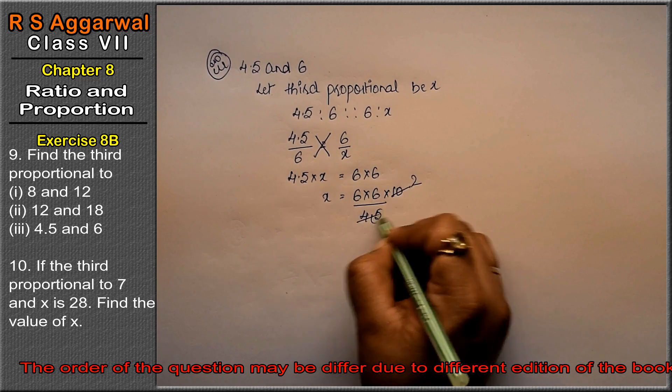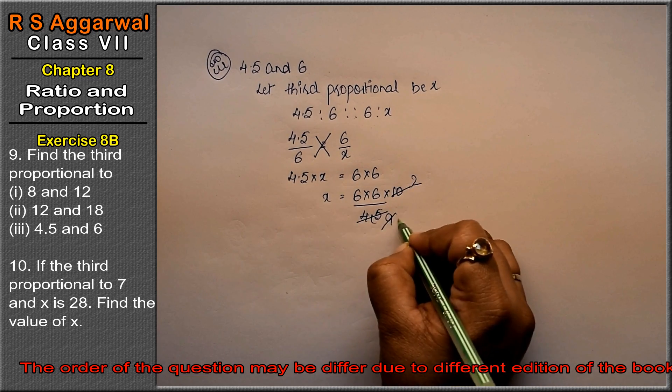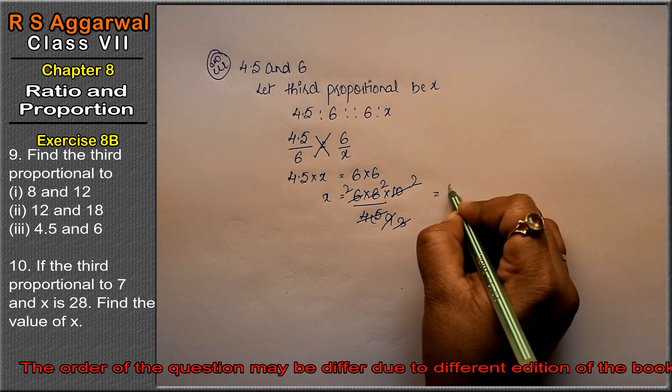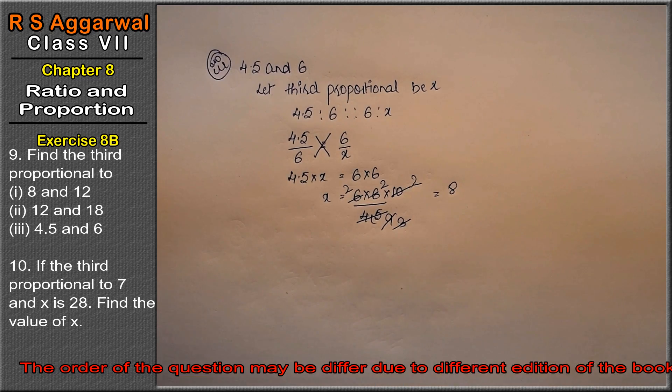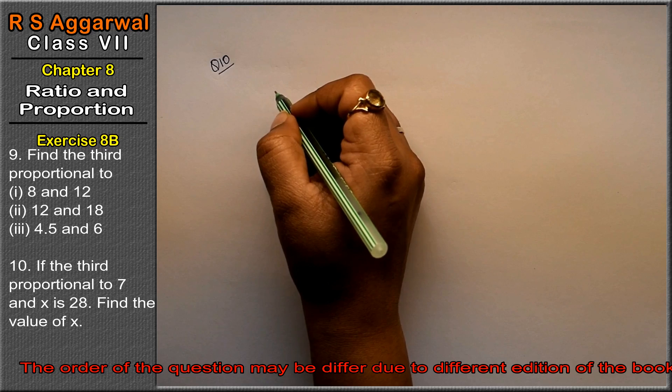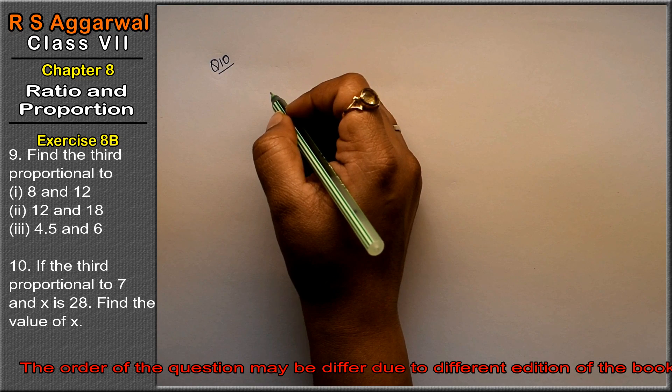See, 5 twos are 10, 5 nines are 45, 3 threes are 9, 3 twos are 6, 3 ones are 3, 3 twos are 6. So how much? 8 is the answer. Let's do question number 10 of exercise 8B, ratio and proportion.